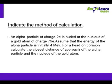Please recall that this is a Rutherford scattering experiment. Assume that the energy of the alpha particle is initially 4 MeV (million electron volts). For a head-on collision, calculate the closest distance of approach of the alpha particle and the nucleus of the gold atom.